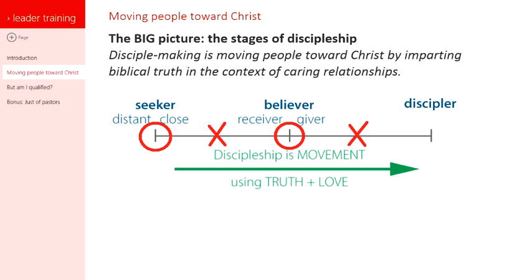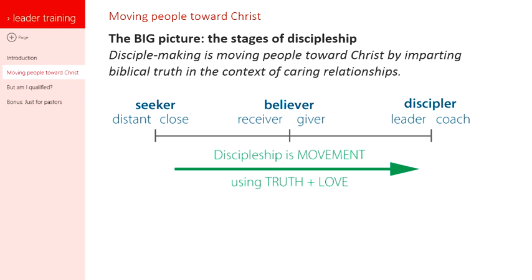Let's fill out this continuum just a little bit more. There are two types of disciplers. The first type is just a leader — that's the most basic type, and it's what we're teaching you to be. We hope that after going through these six weeks, you'll see that you're qualified to help people move toward Christ. And then there's another kind of discipler: what we're going to call the coach. The coach is the person who leads leaders — so a leader is a group leader, and the coach is a leader of leaders. The person bringing you through this is your coach.